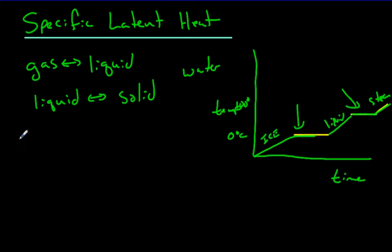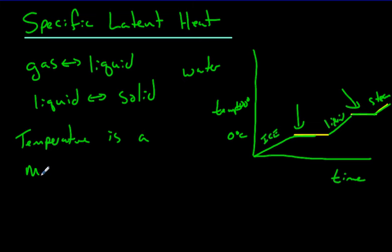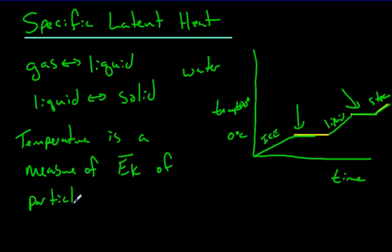When we talk about latent heat, we're interested in what is happening at these plateaus. Temperature is a measure of the average kinetic energy of the particles in the substance — a little bar on top just means average of particles.